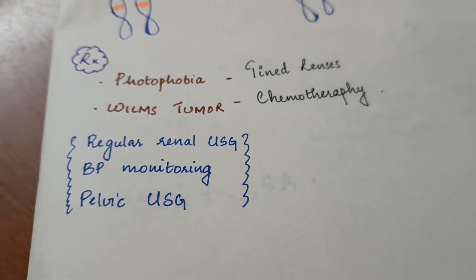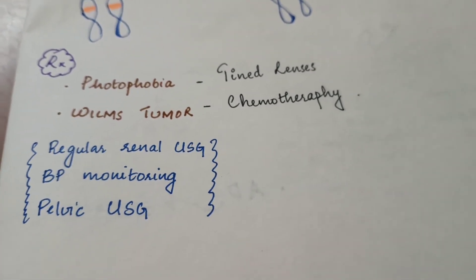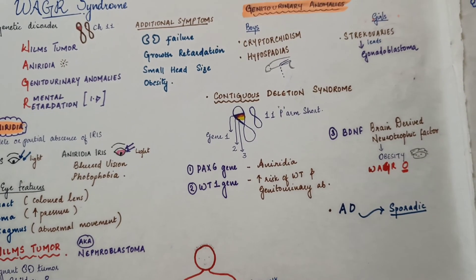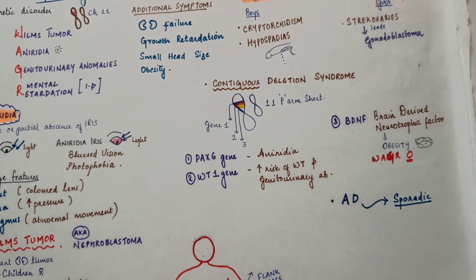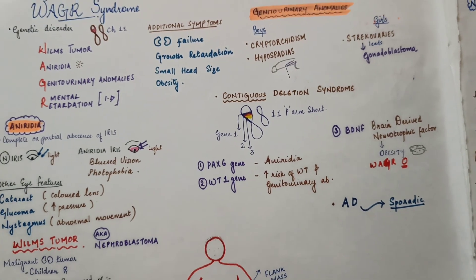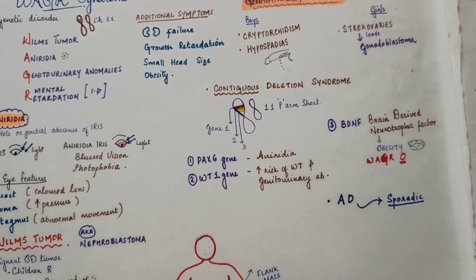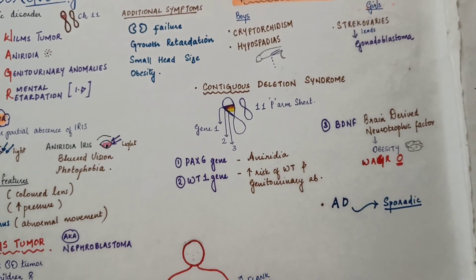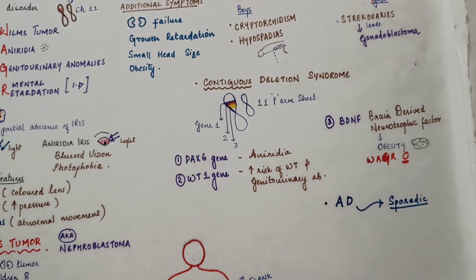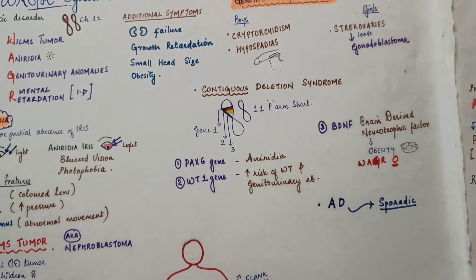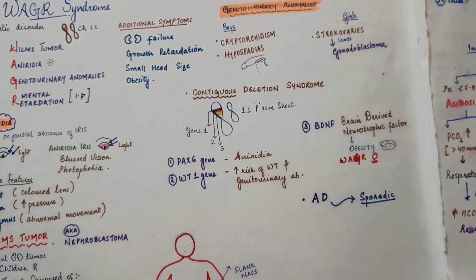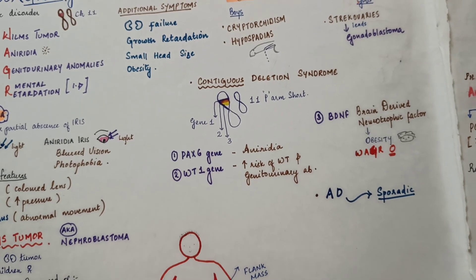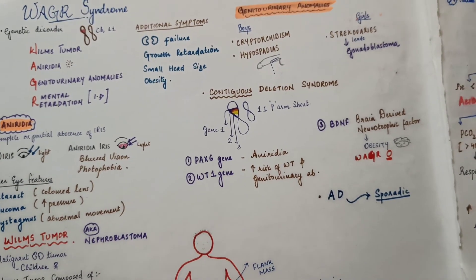In summary, WAGR syndrome is a contiguous gene deletion syndrome caused by deletion of several genes on chromosome 11, including PAX6 and WT1. PAX6 deletion causes aniridia, WT1 deletion increases risk of Wilms tumor and genitourinary abnormalities, and patients also have intellectual disabilities. Thank you for watching — comment below if you have any doubts.